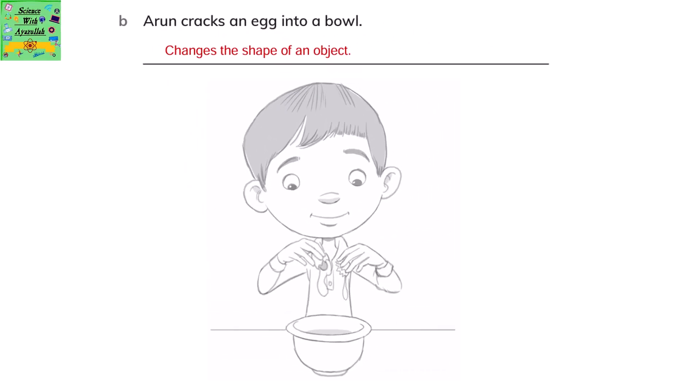Arun cracks an egg into a bowl. This changes the shape of an object, in this case the egg.